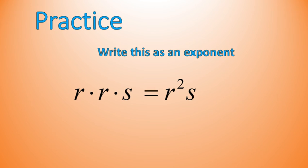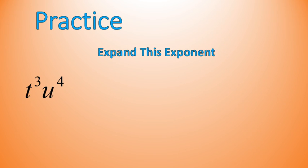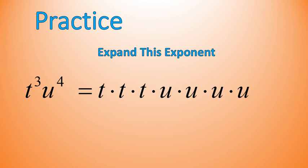Now I want you to expand this exponent from exponent form into expanded form — basically the reverse of what we've been doing. Welcome back. Your notebook is getting filled up because it should look like this: t times t times t times u times u times u times u. Notice expanded form definitely takes up a lot more space than exponential form.